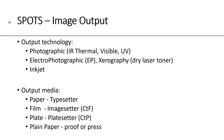Now that we understand what a pixel is, let's talk about spots. Spots are for image output. Output technology could be photographic using infrared, thermal, visible, or ultraviolet UV. The technology could be electrophotographic, which we call EP — most people refer to this as xerography, which uses a dry laser toner. Or that output technology could be inkjet. The media used for output could be paper, film, an aluminum or polyester plate for computer-to-plate, or plain paper used for proofing or printing.